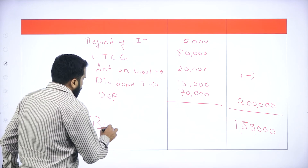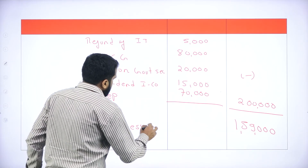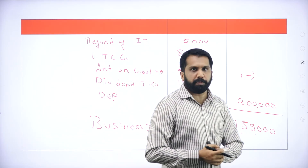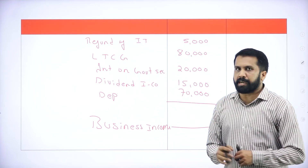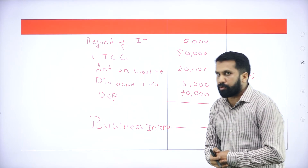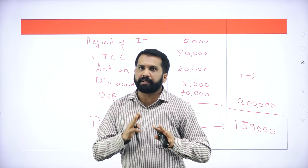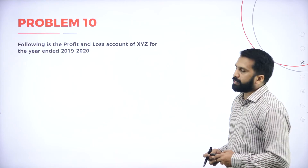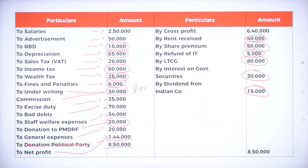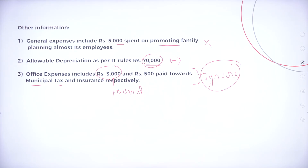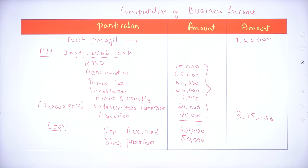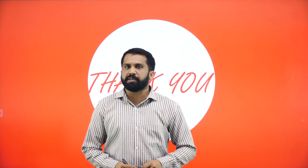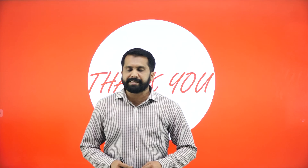This is all about your business income. We're done with your business income — hope you are clear. We have done only business income, not total income. You know how to do total income — we have done almost nine problems on total income. Please go through all those problems. I'll go back to the previous slide so you can take a screenshot. Problem Number 10 — question part, solution part, continuation. This is all about today's session. Hope you understood. Thank you.